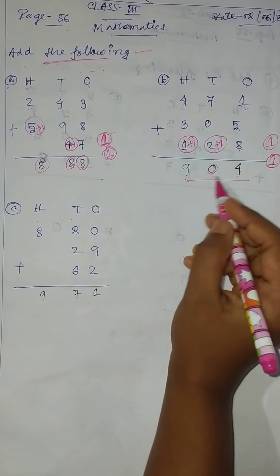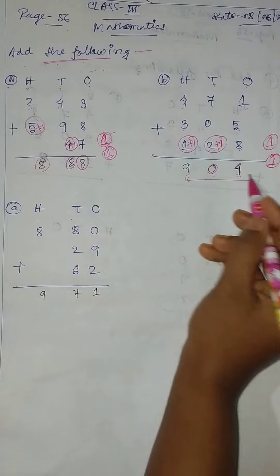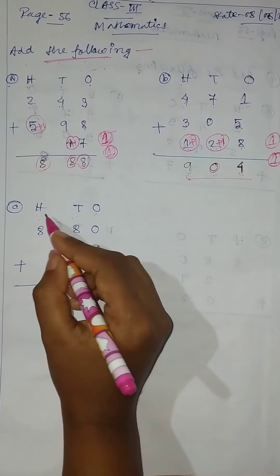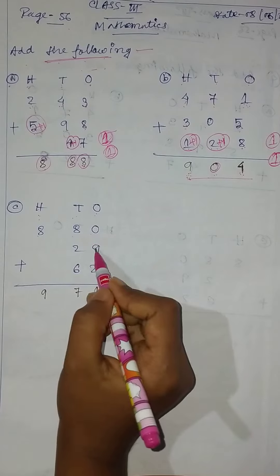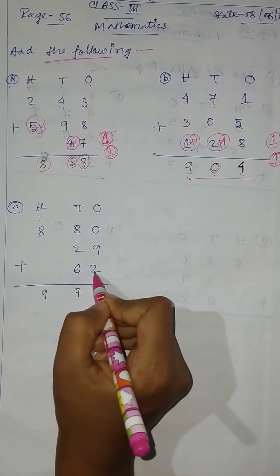904. Then, 1 stands 100, so 880 plus 29 plus 62.